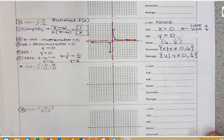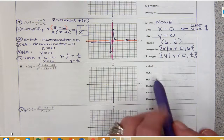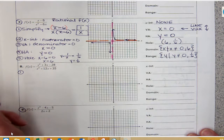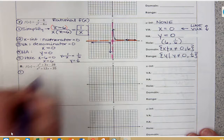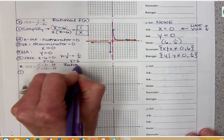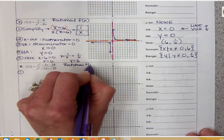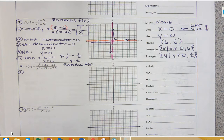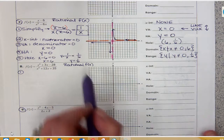So let's talk about the steps that we need to go through to find our answers. Step one is to simplify, which means to factor. We need to factor the top and the bottom because these are rational functions. When you have a rational function, that's where you have your x on the top and the bottom. When you have a reciprocal function, there's only a number on the top.